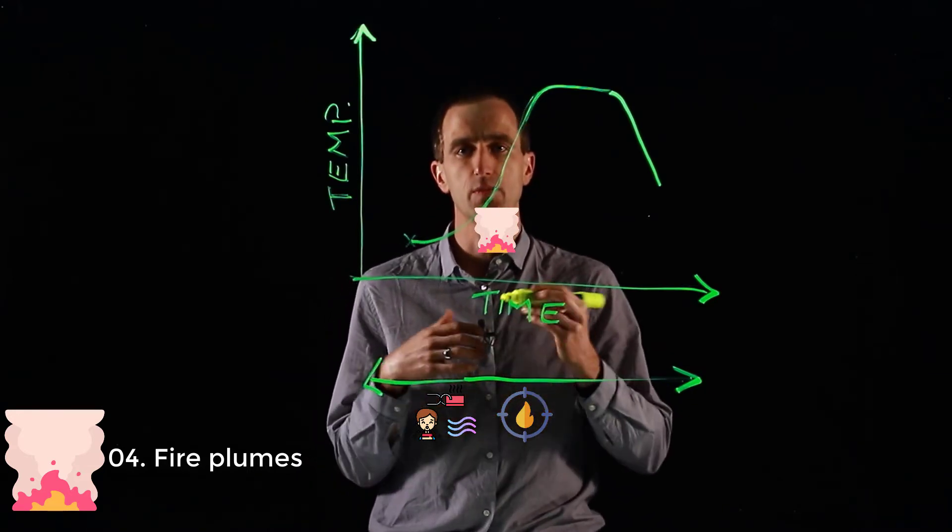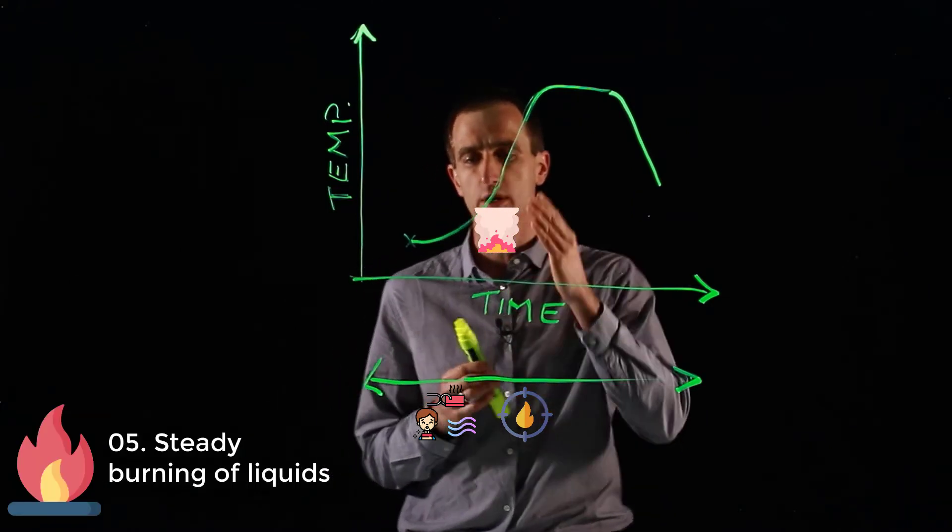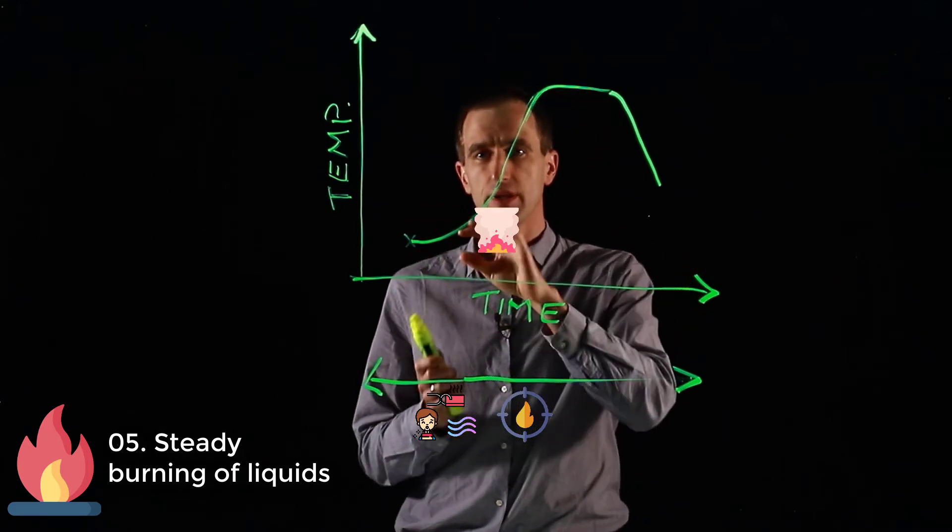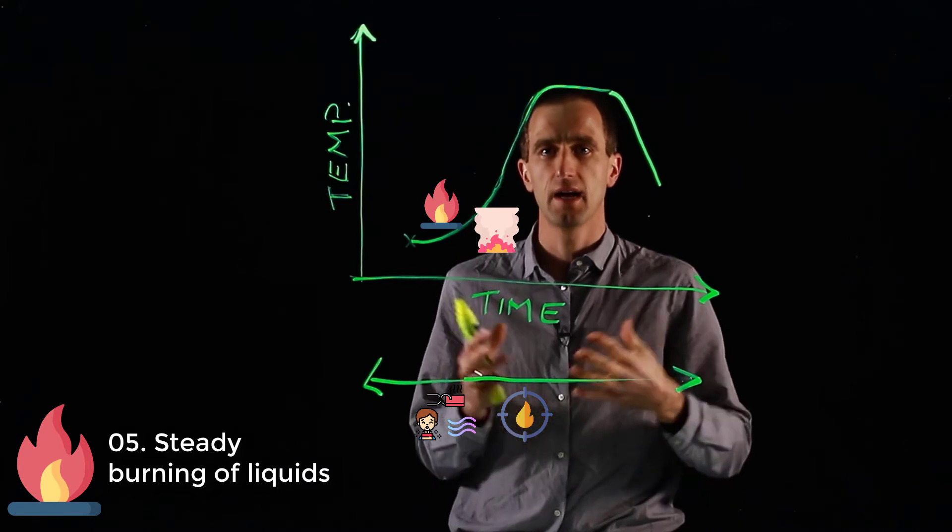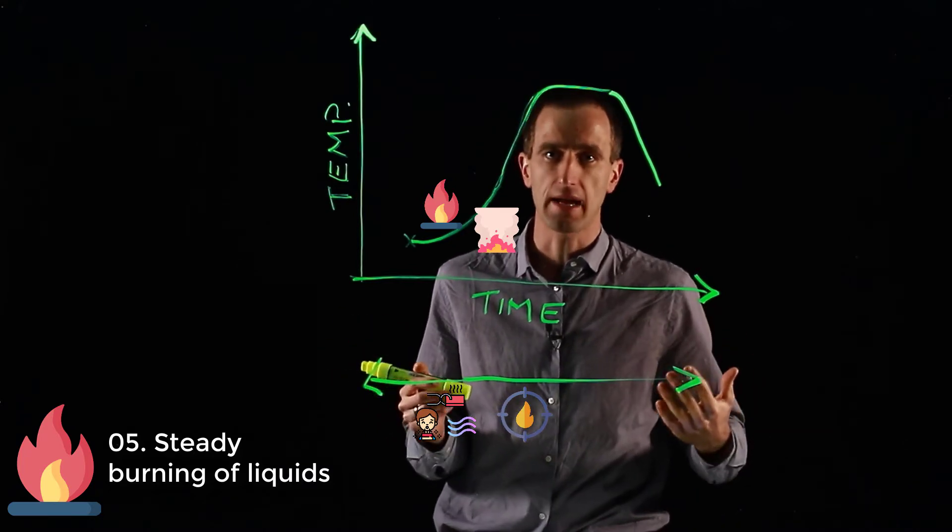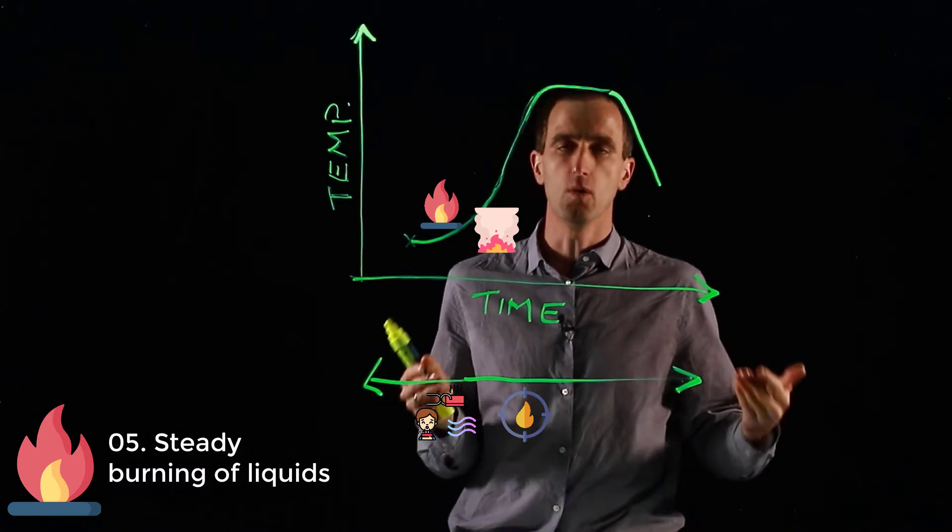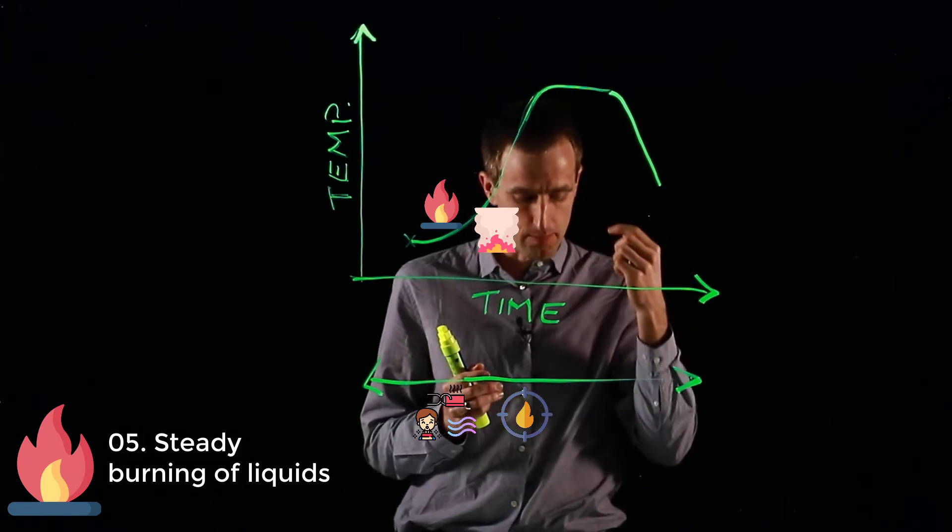Once we've covered smoke plumes then we're going to go into steady state burning of liquids. Further down here on the curve, generally that would be linked to plumes as well because you would have a pool fire. This would maybe be your crude oil tank that's now on fire and how would the steady burning of a liquid work with that. It would be linked very closely to fire plumes.